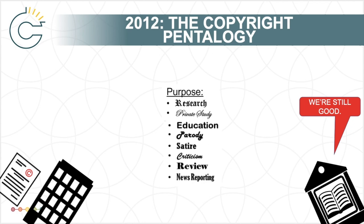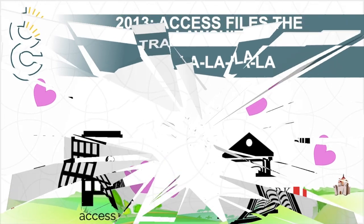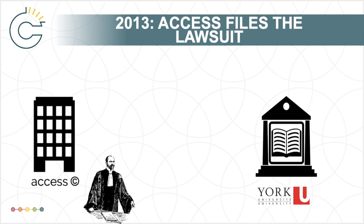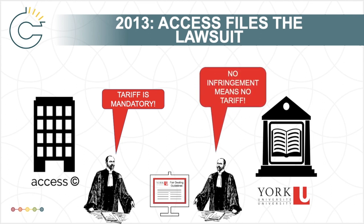Which brings us to the case in question. Hopes that Access Copyright might be more cooperative following the 2012 decisions were dashed when the collective filed a lawsuit against York in 2013. Access Copyright sued York to enforce the terms of its interim tariff, essentially contending that the interim tariff had a mandatory effect on York, that York could not opt out, and that if York made an infringing copy, they would be responsible for the full amount of royalty payments outlined in the tariff. York countered, requesting that the court declare its copying under fair dealing guidelines to be fair dealing and thus non-infringing — arguing that even if a tariff was mandatory, they had not infringed copyright.